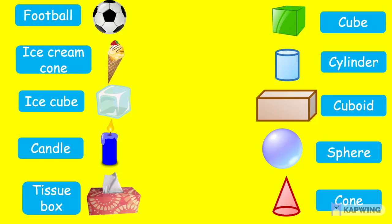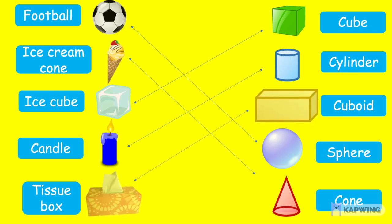So, children, let's recall by matching all the objects with the following 3D shapes. What is the shape of the football here? Yes, a football is the shape of a sphere. What about an ice cream cone? An ice cream cone is in the shape of a 3D cone. And next is an ice cube. What shape does it belong to? Yes, it belongs to a cube 3D shape. Next we have a candle. Candle belongs to a cylinder 3D shape. And we can take this tissue box as an example for a cuboid 3D shape.